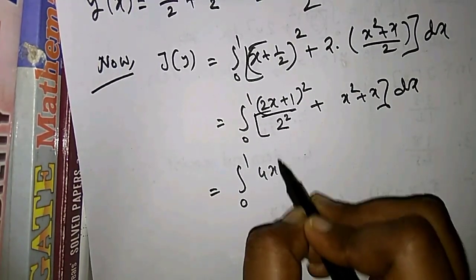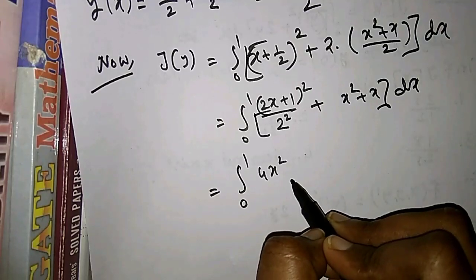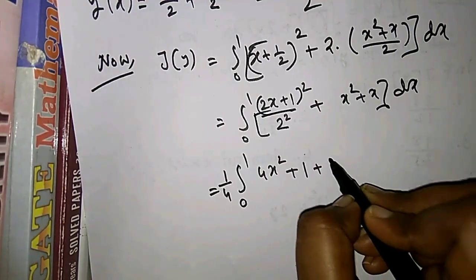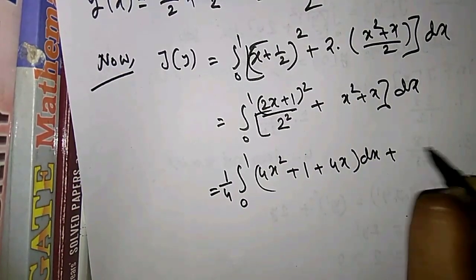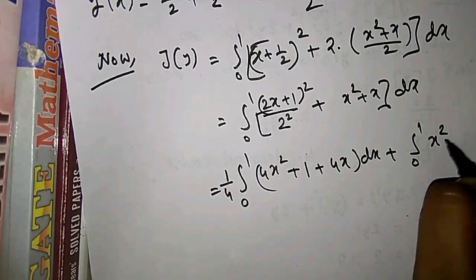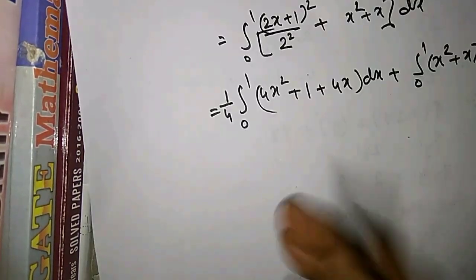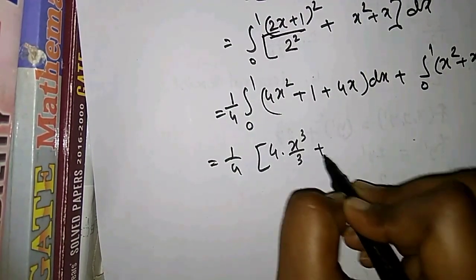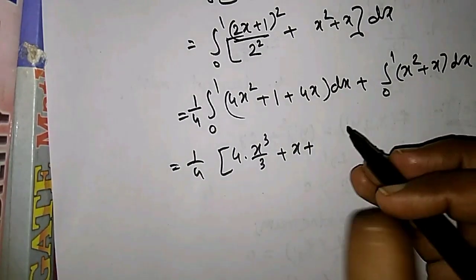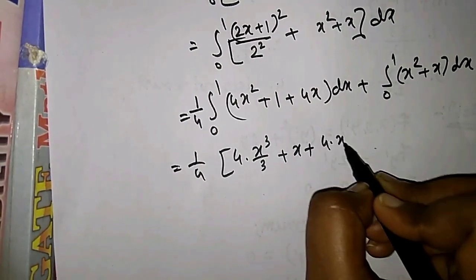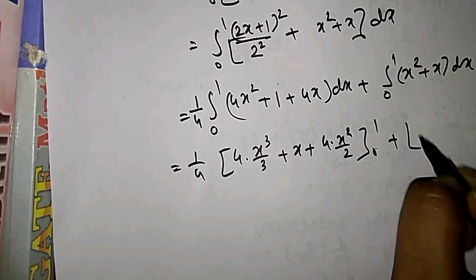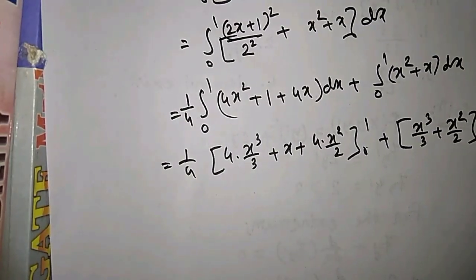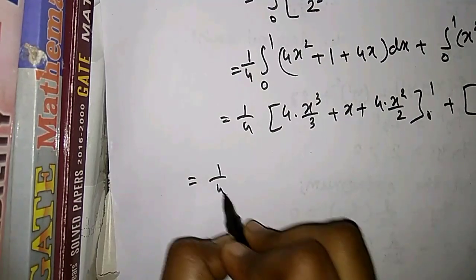Expanding, this is the integral from 0 to 1 of (1/4)(4x² + 4x + 1) plus x² + x dx. Taking 1/4 outside: 1/4 times the integral of (4x² + 4x + 1) dx, plus the integral of (x² + x) dx from 0 to 1. Integrating gives 1/4 · [4x³/3 + 2x² + x] plus [x³/3 + x²/2] evaluated from 0 to 1.